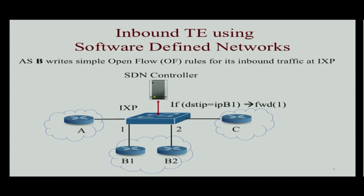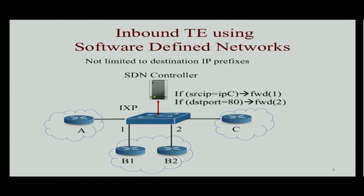Let's try to answer that question with the same example by bringing SDN into the picture. What I do here is replace the switching fabric for the exchange point with OpenFlow switches and put an SDN controller there. Now the operator for ASB, which was initially doing some BGP-based solution, will write an OpenFlow rule in the exchange point. This rule can be as simple as: if the destination IP equals some prefix B1, then forward it to port 1 connected to the Atlanta router or to the Washington router. Since this solution does not require dependency on remote parties, it is more predictable. And since OpenFlow rules can be based on any packet header field, the inflexibility problem is resolved — inbound traffic engineering can be based on source IP address or application type.